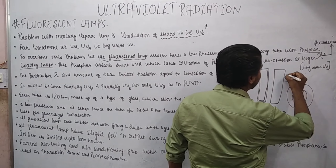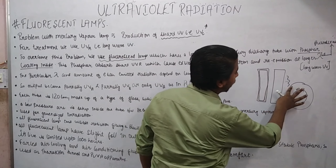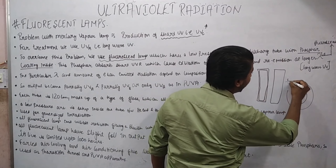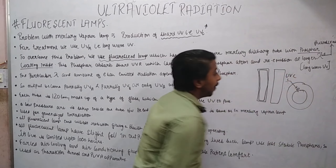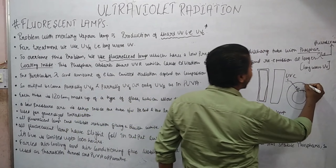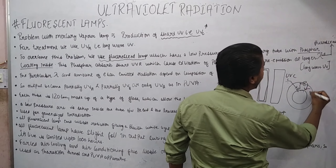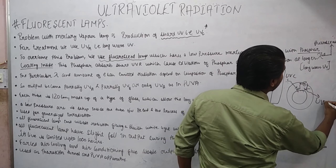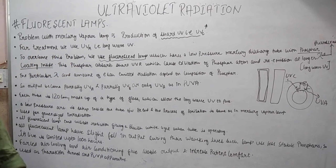This is the electron. When the UVC falls on the electron, this electron gets excited to a higher energy level. And when this electron moves back to the lower energy level, it gives UVA — the long wave UV.